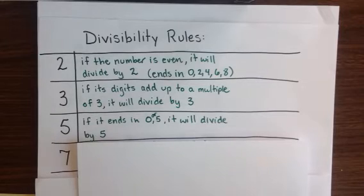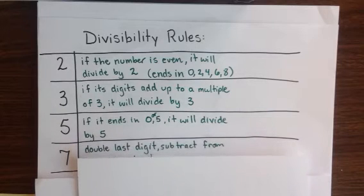The final rule is the rule for 7s. And some people consider the rule for 7, the shortcut, to actually be a longer process than just doing the long division or the short division for 7. And so if you would prefer to just do division to check to see if a number divides by 7, that's certainly fine. But if you like tricks and want to learn the trick, here's the trick for 7.